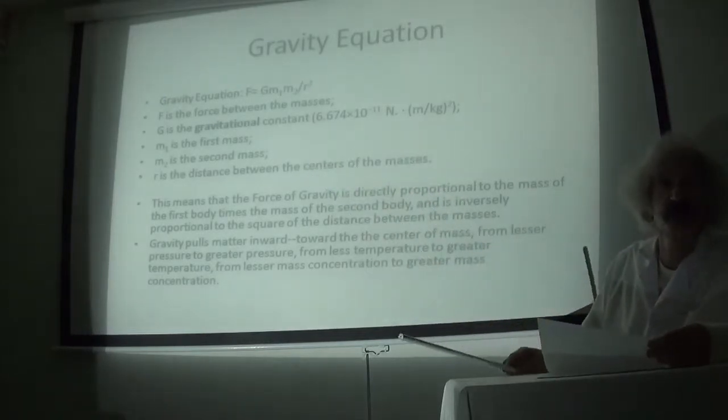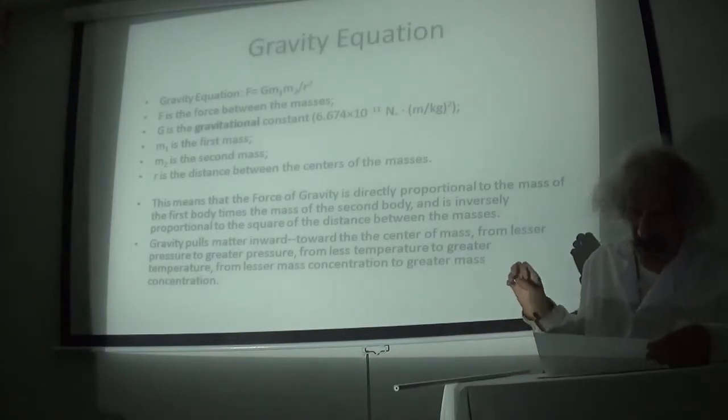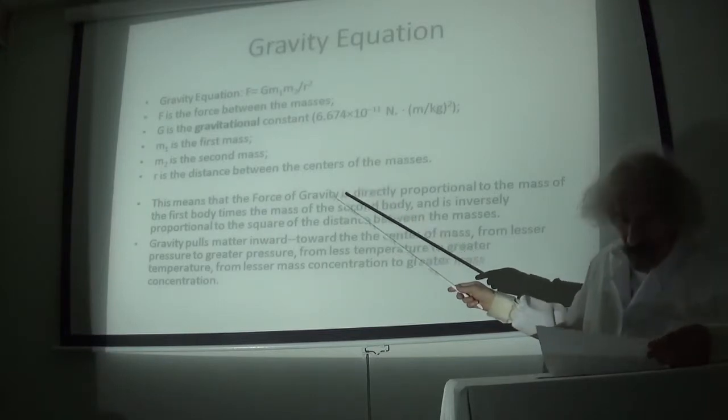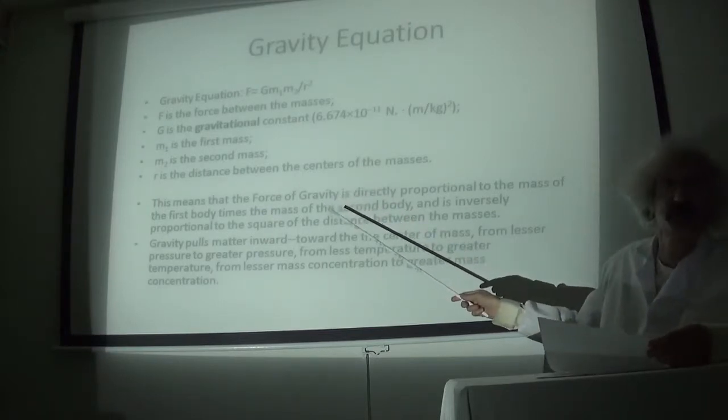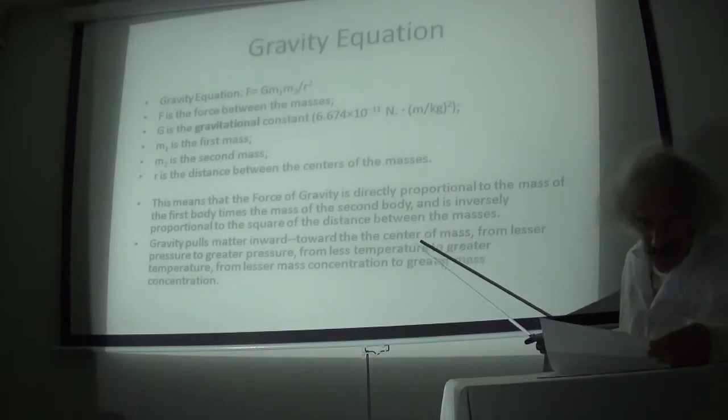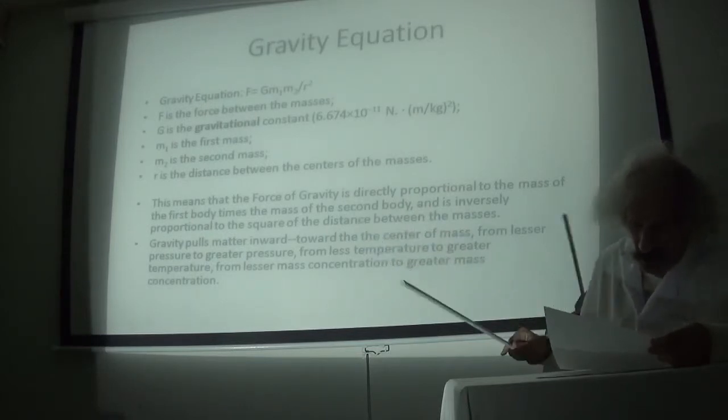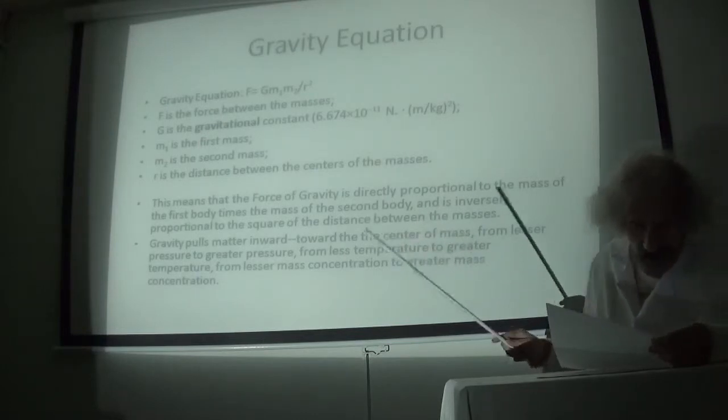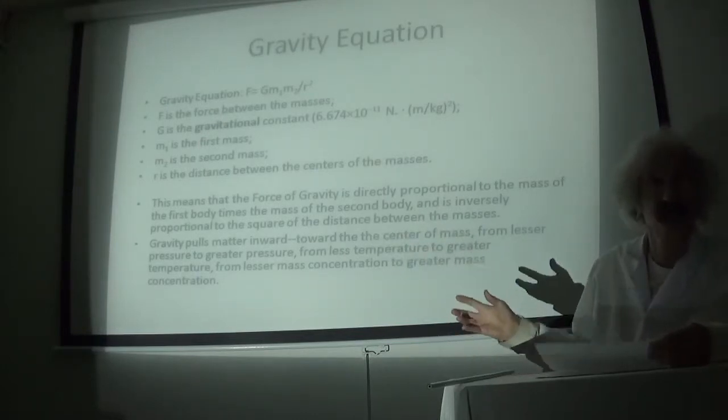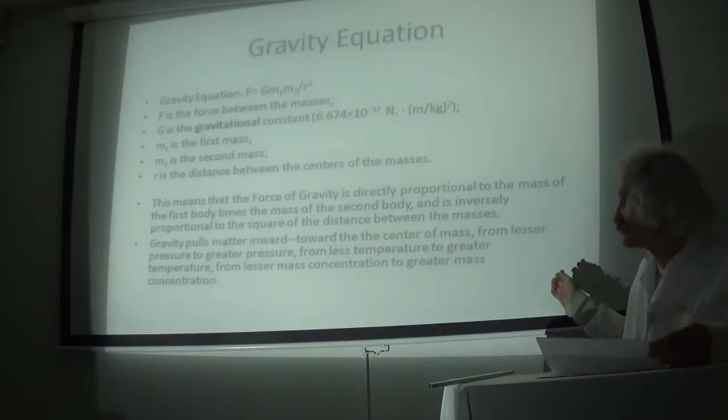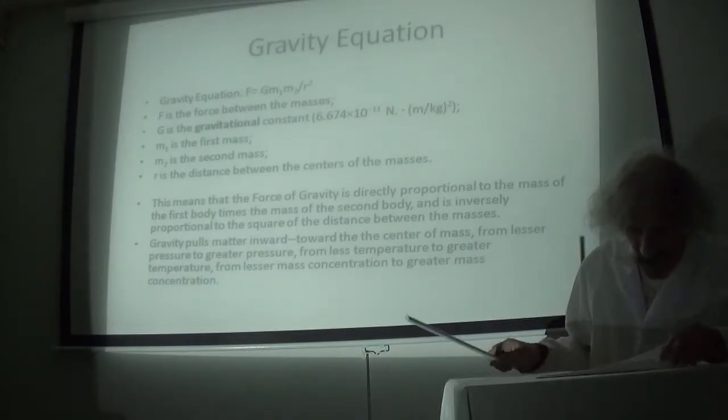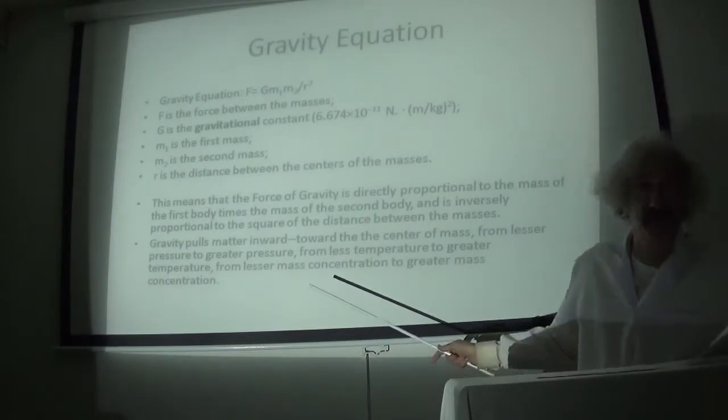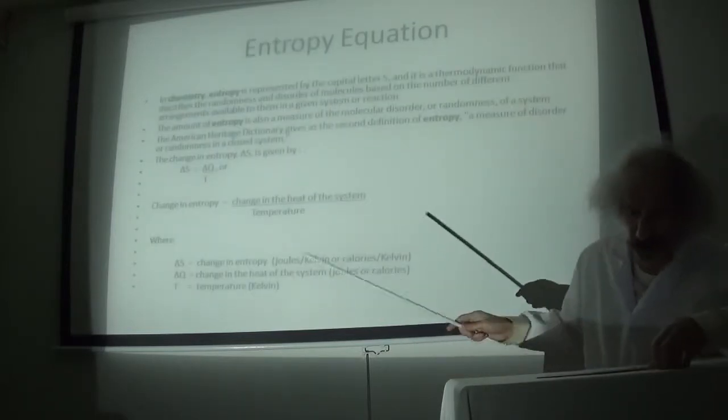This means that the force of gravity is directly proportional to the first mass times the second mass, and inversely proportional to the square of the distance between the masses. Gravity pulls matter inward toward the center of mass, from areas of lesser pressure to greater pressure, from lesser temperature to greater pressure at the center, and from less mass concentration to greater mass concentration, like at the center of the earth.